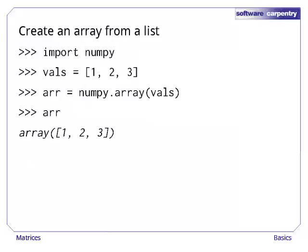Let's start by creating an array from a list. We'll import NumPy, and then call NumPy.array with a list of initial values as an argument. The resulting array is three elements long.